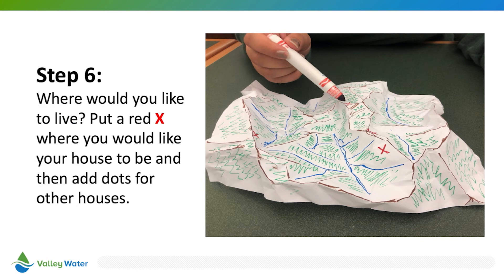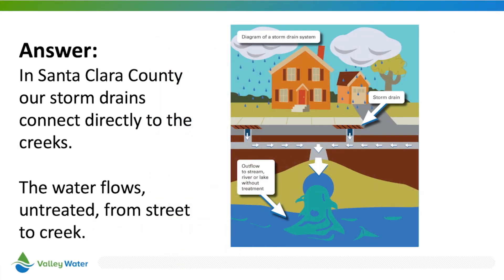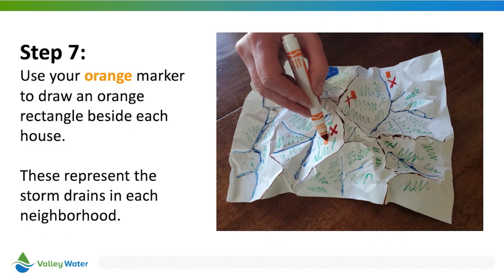Now we're going to make some choices for our community, starting with where you would want to live if you could live anywhere on your map. Using the red marker, add an X to mark the spot where your home will be. Then add some dots to mark places where you think other people would like to live. Now use your orange marker to draw a rectangle beside each house — these represent the storm drains in each neighborhood.